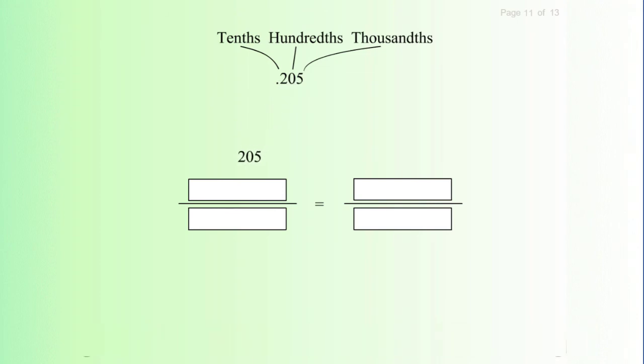Point two zero five (.205) equals two hundred and five over one thousand, which can be reduced to forty-one over two hundred.